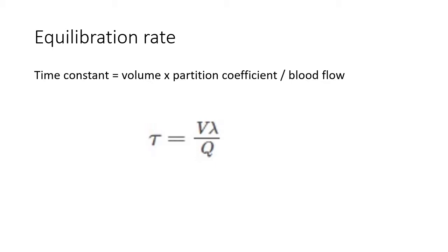On the other hand, the compartment with a high blood flow rate will equilibrate more quickly, therefore the time constant is shorter, therefore Q belongs on the bottom line.